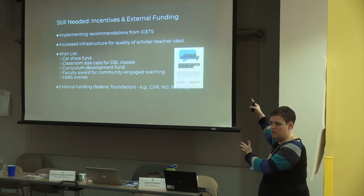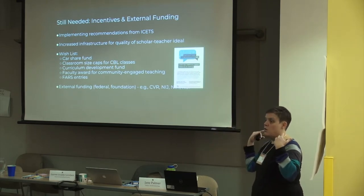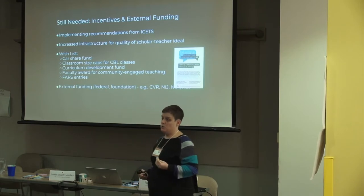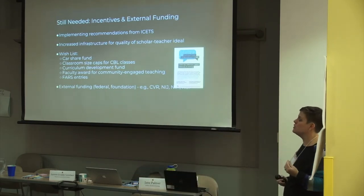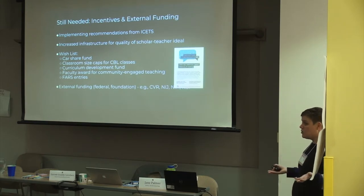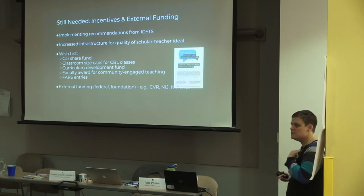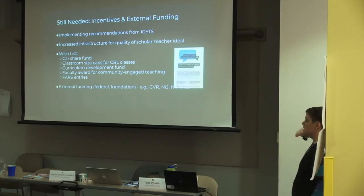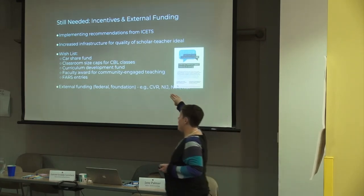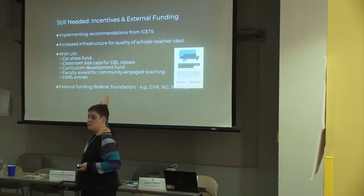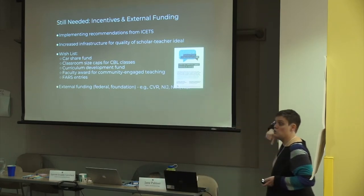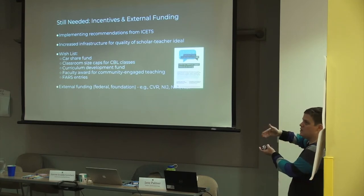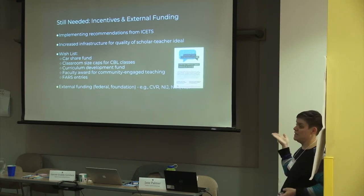There was a $500 stipend you could get if you were transforming your class to community-based learning, because it does take buying books and understanding the philosophy. We've also been in conversations with Interim Provost Mary Clark about a university-level award around community-engaged teaching or research — it's been approved and is no longer on the wish list, it's on the 'it's happening' list. And then how do we talk about this in our FARs? I've had people tell me to just put CBRS under 'service,' but it's also teaching and research — how do we get credit where credit's due?